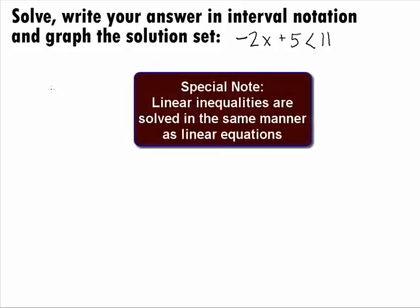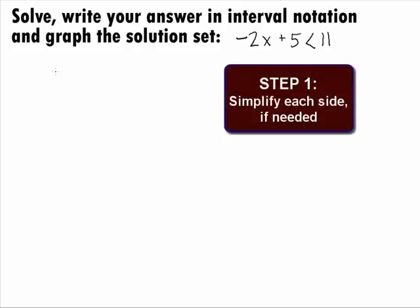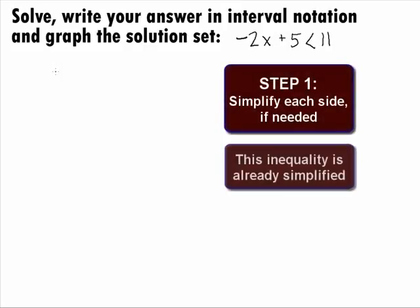Note that we solve linear inequalities in the same way that we do linear equations. We want to get our variable on one side by itself and everything else on the other side by using inverse operations. In this problem, it looks like we have several things we need to do to solve this. In Step 1, we want to simplify each side if needed. This inequality is already simplified.